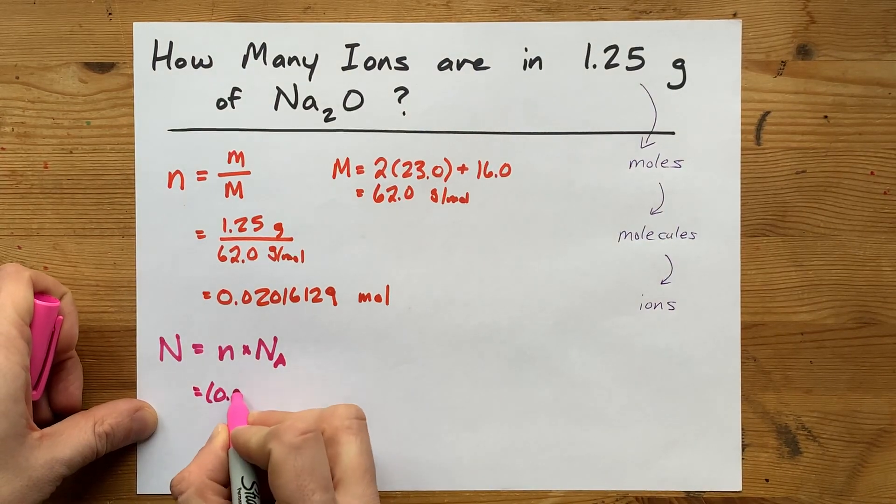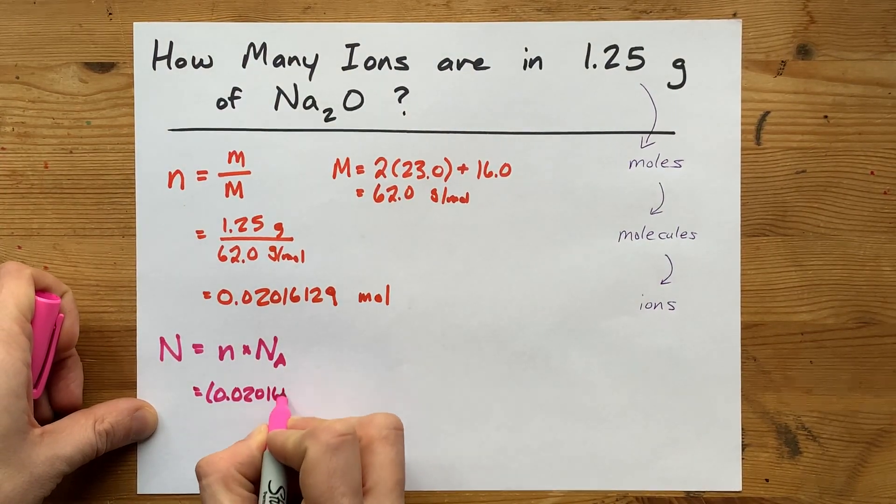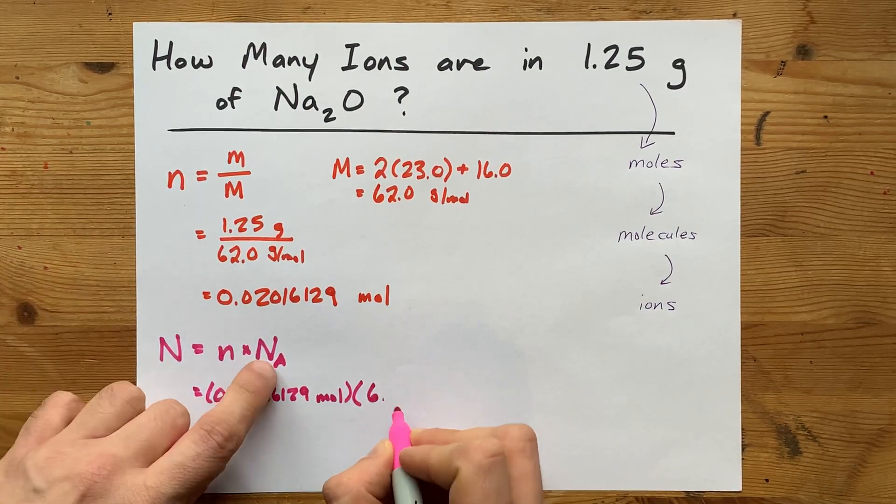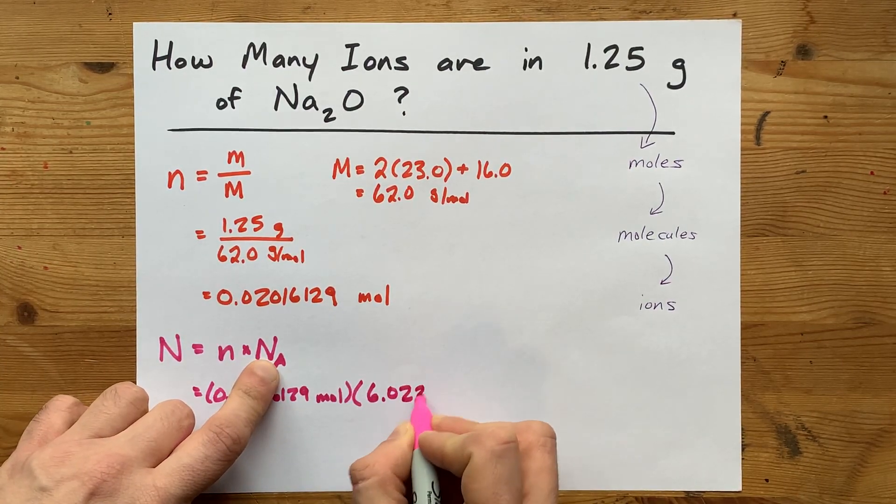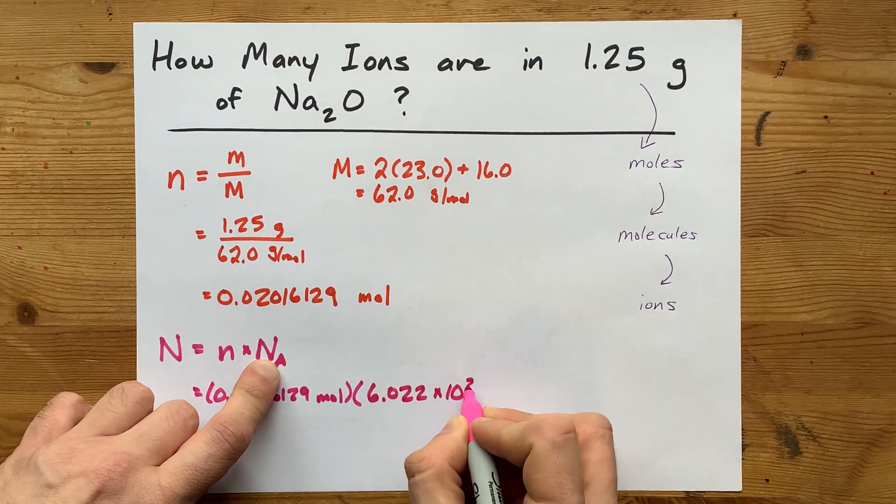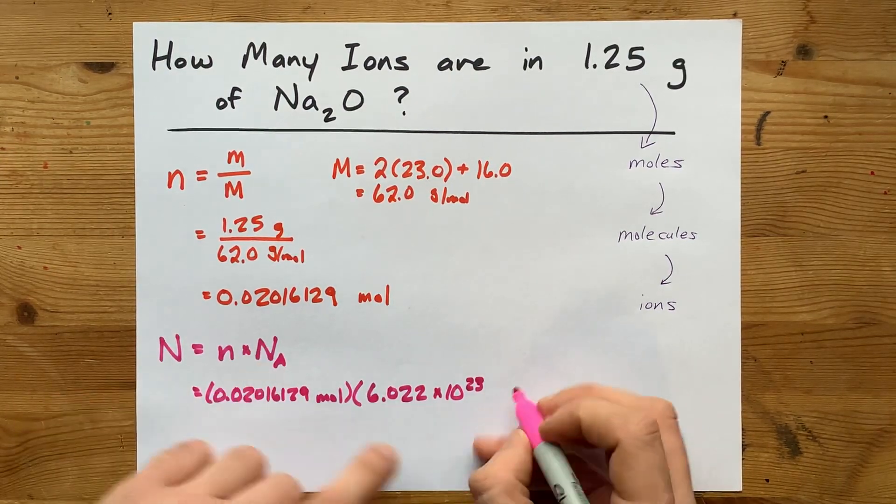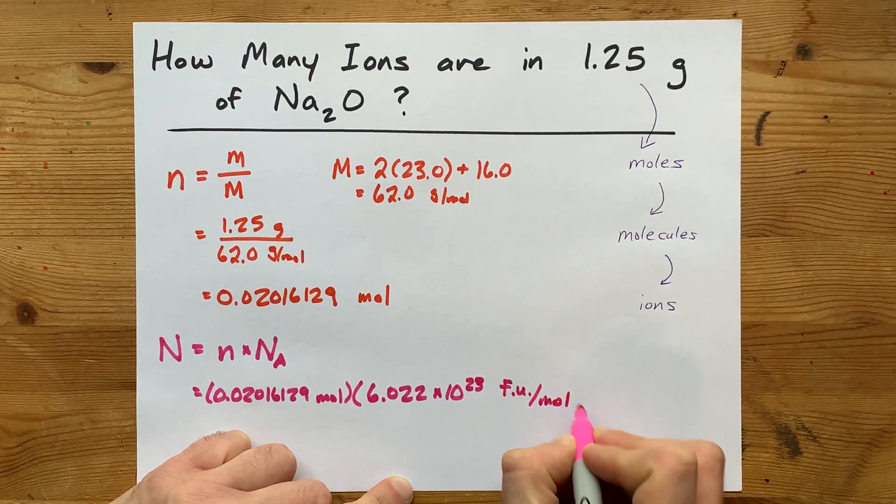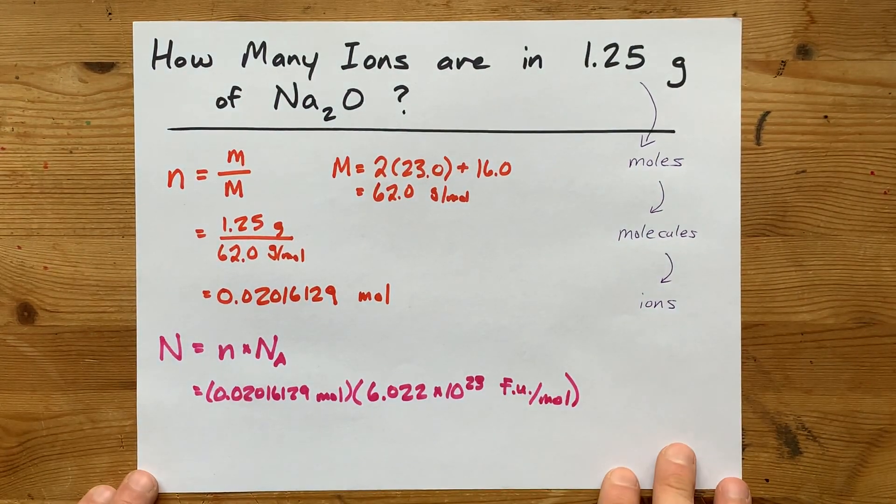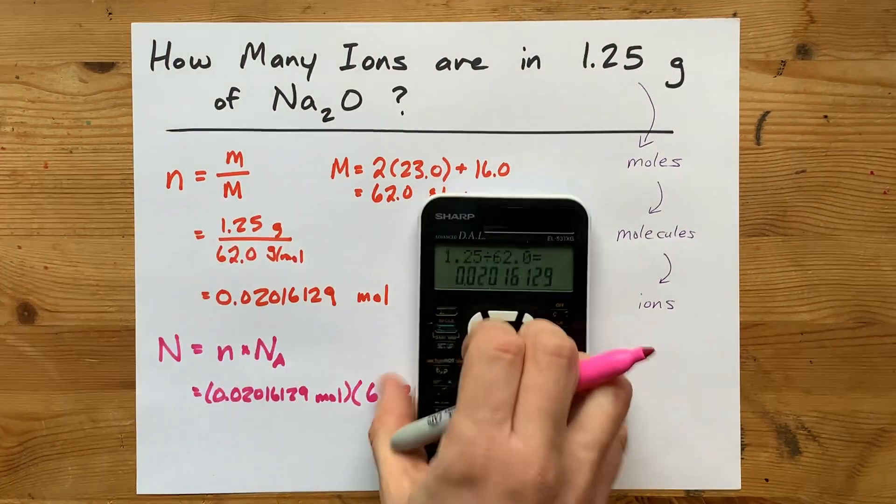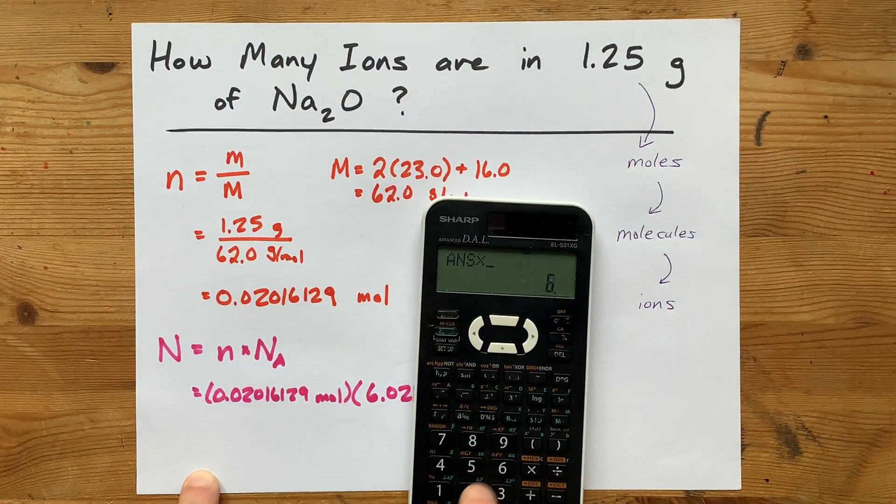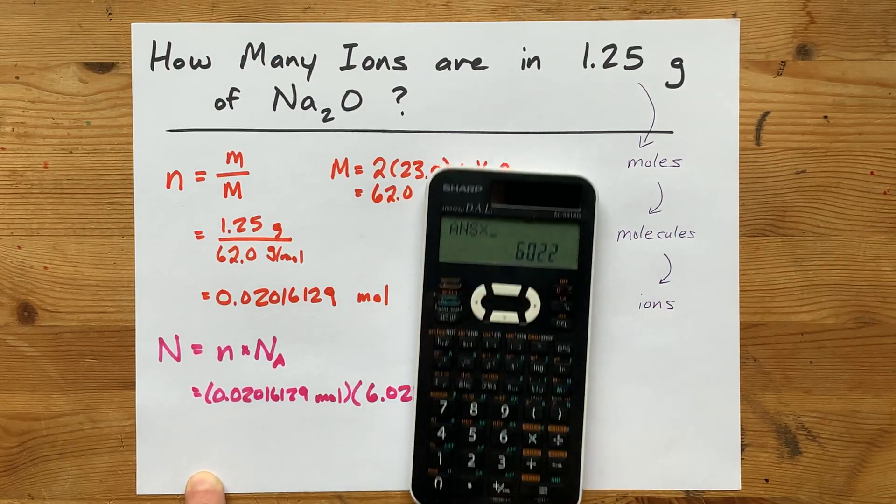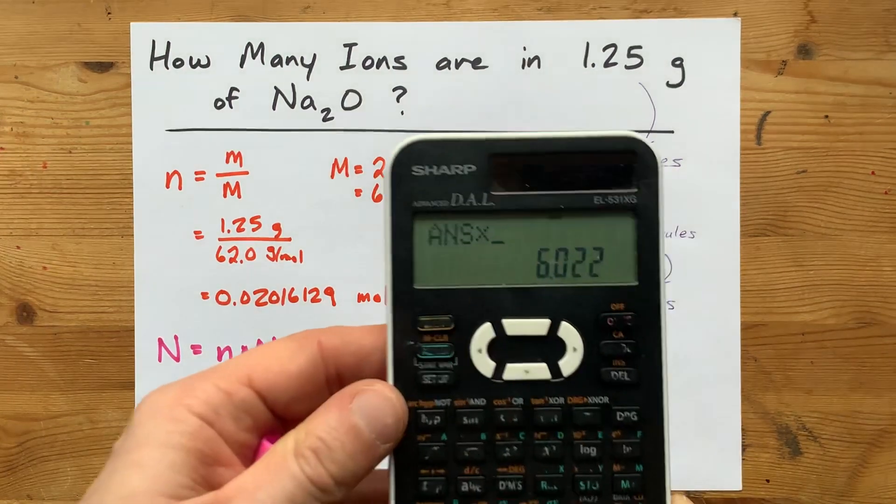So, I'm going to take my 0.02016129 moles, and I'm going to multiply it by Avogadro's number, 6.022 times 10 to the power of 23. Now, that's going to be formula units per mole. Yes, I did write F-U for formula units.